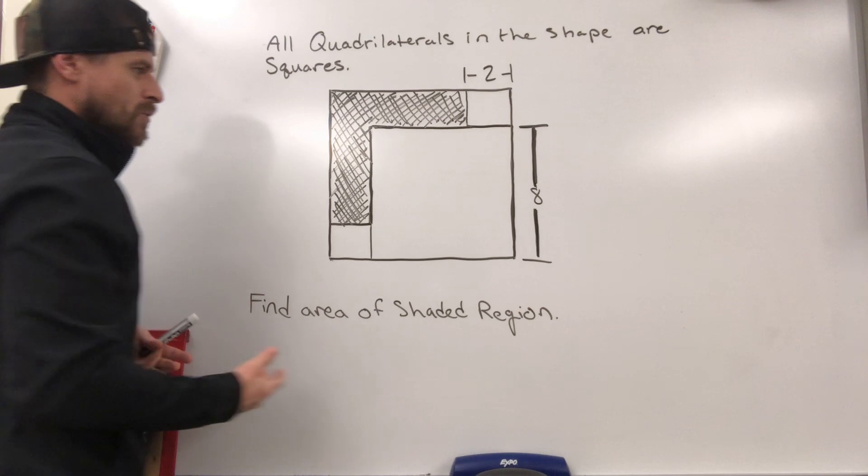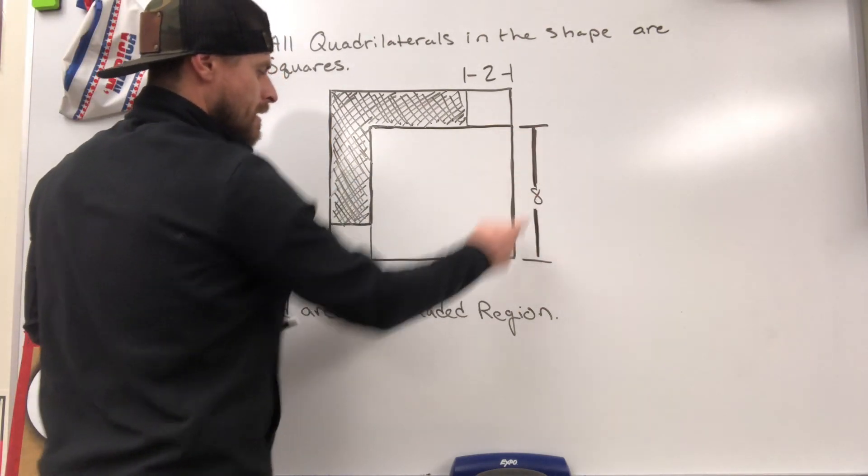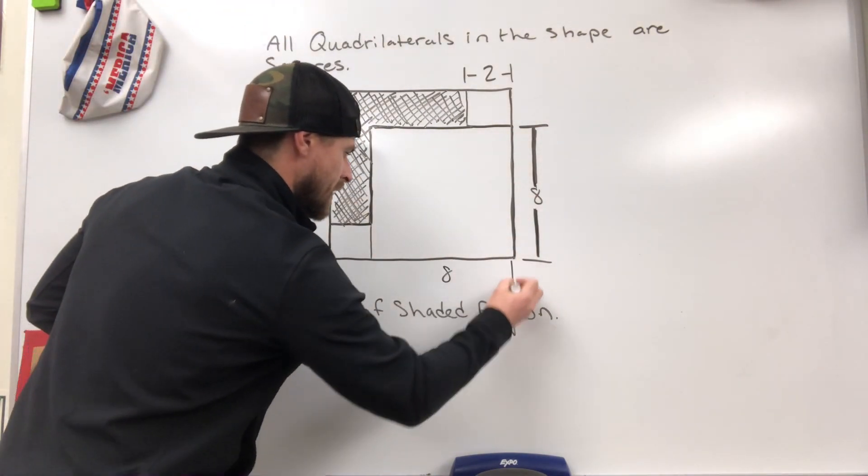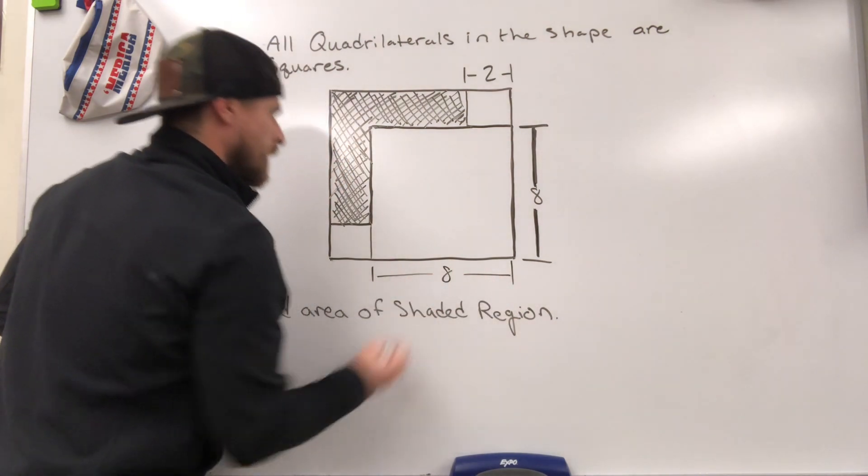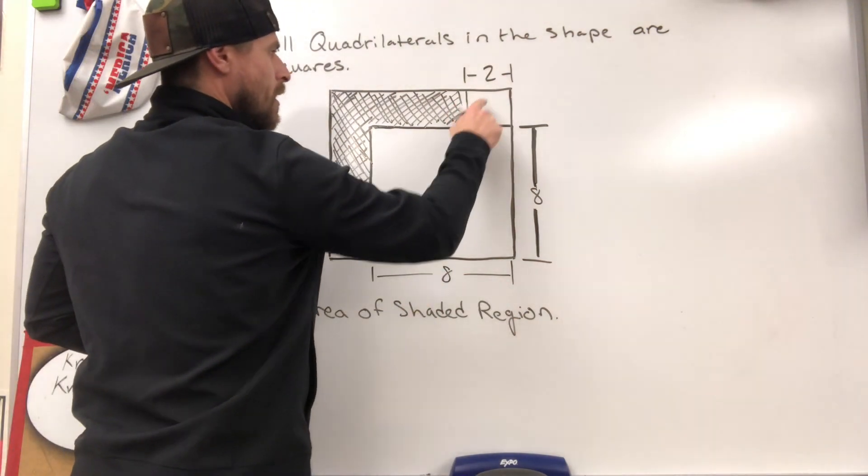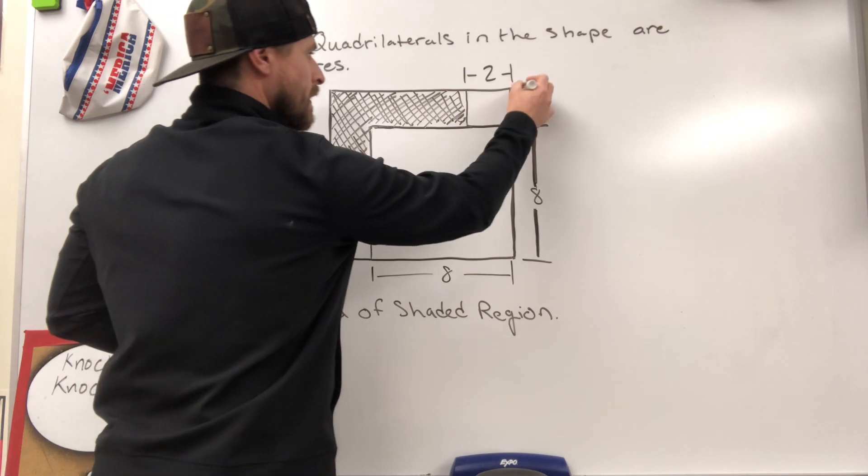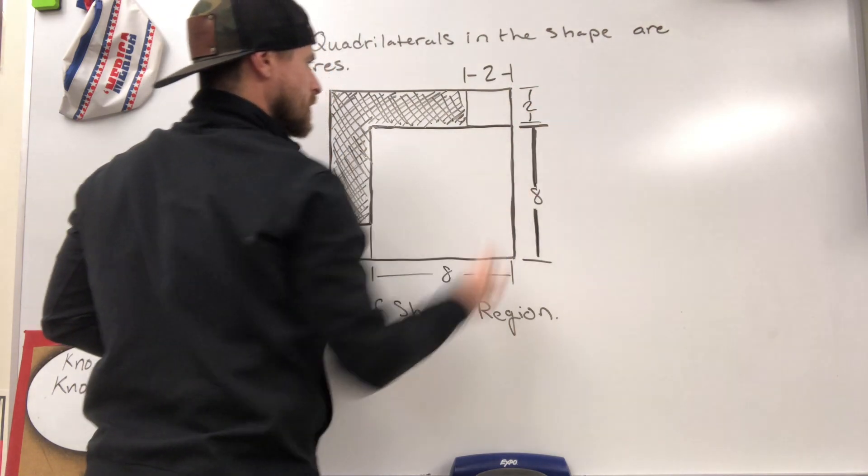They all have to be squares, which means if this is 8 here, down here we know that this is also going to be 8 units long. And if this is 2 units long and that's a square, then this right here has to also be 2 units long.